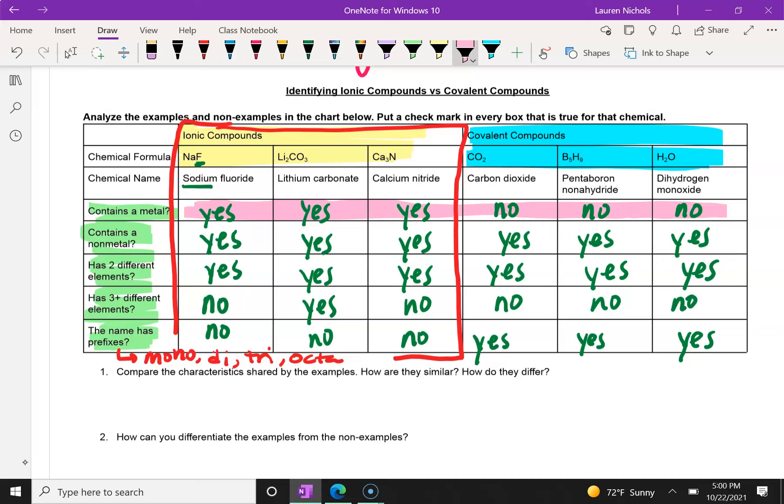They all have two different elements, and remember, that's because they're all compounds. A compound has to have two or more elements. And something else we see is that whether or not the name has prefixes is also consistent and opposite for ionic and covalent compounds. Ionic compounds do not have prefixes in the name of their formula, and covalent compounds do.